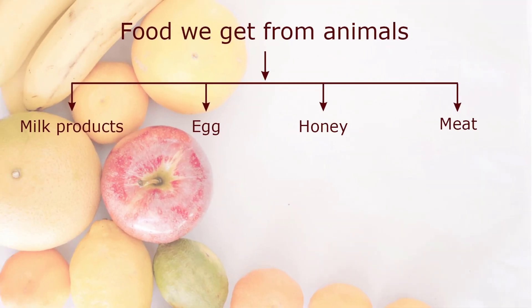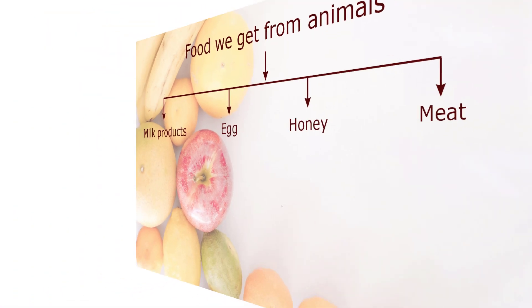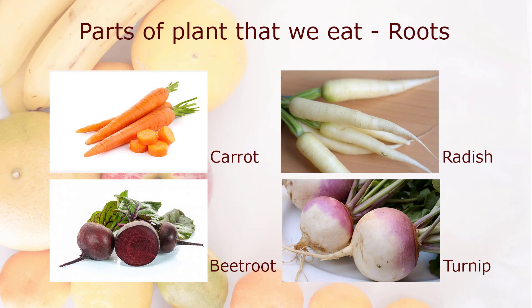Parts of plants that we eat — Roots. Food we get from roots: carrot, radish, beetroot, and turnip.